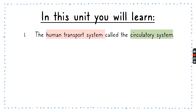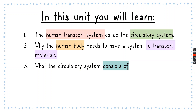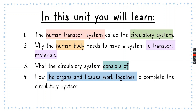In this unit, you will learn the human transport system, known as the circulatory system, why the human body needs to have a system to transport materials, what the circulatory system consists of, and how the organs and tissues work together to complete the circulatory system.